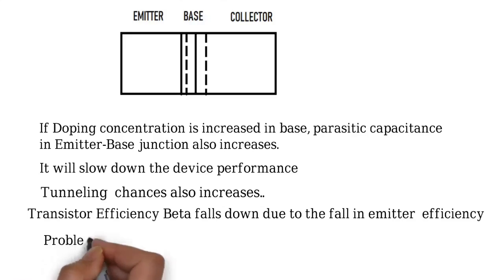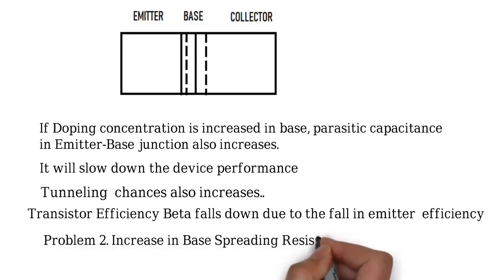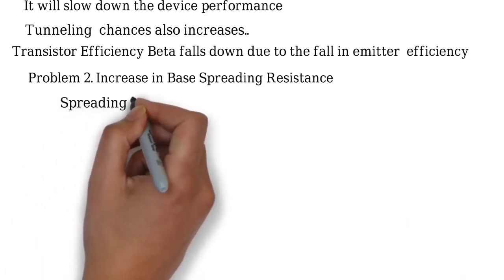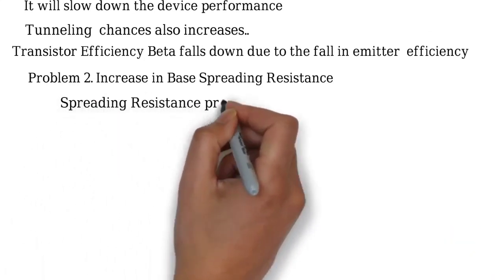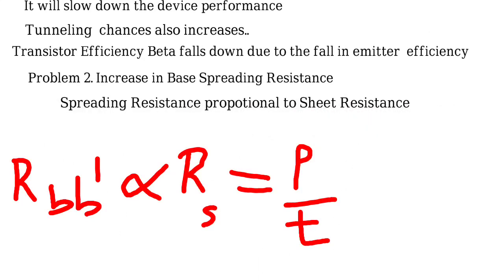Then another big problem is the increase in base spreading resistance, commonly represented as R_BB'. The spreading resistance is proportional to the sheet resistance. Sheet resistance is ρ divided by thickness, ρ/T. When you reduce the thickness — that is, when you reduce the width of the base — the sheet resistance in the base increases, which is proportional to the spreading resistance. So the spreading resistance is going to increase if you decrease the width of base.